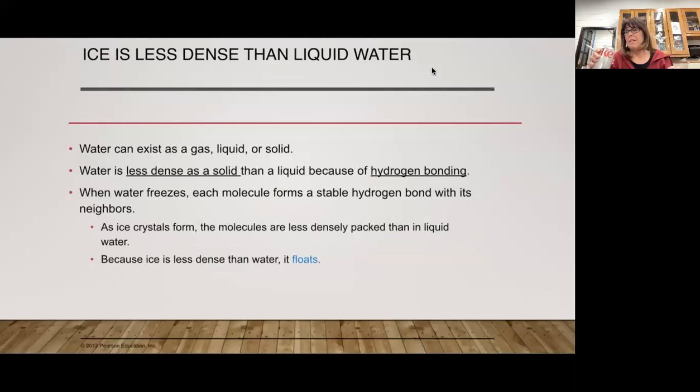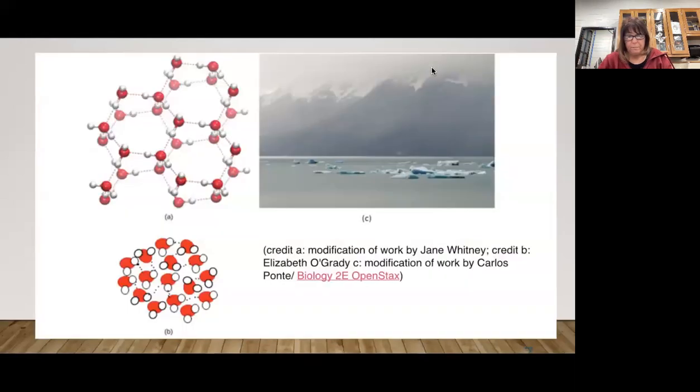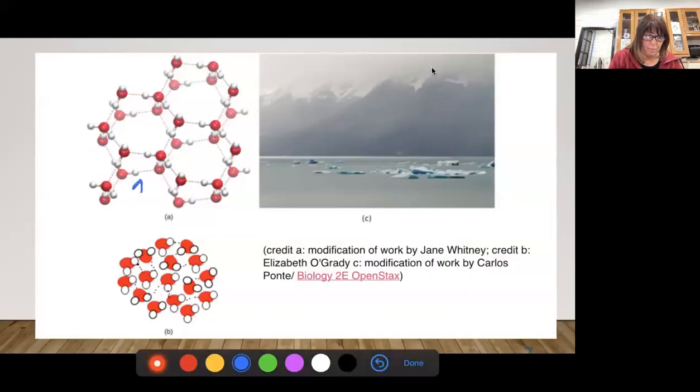As ice crystals form, like I said, the molecules are less densely packed. This is also why ice floats because ice is less dense than water. Here's a picture of this. You can see all these hydrogen bonds and how it's like what we call crystal structure. We get nice and organized, and so we're spreading out, and this causes our density to go down.